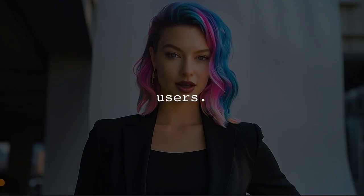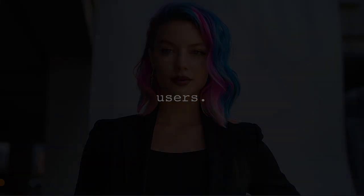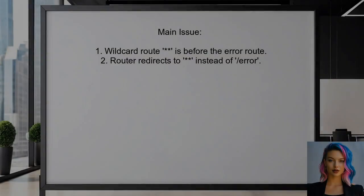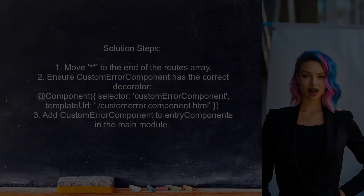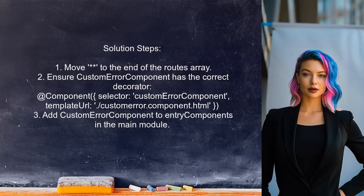Now let's look at the answers provided by other users. The main issue identified is the order of routes in the approuting.module.ts file. The wildcard route is placed before the error route, causing the router to always redirect to the wildcard instead of the custom error page. To fix this, move the wildcard route to the end of the routes array — this allows the error route to be reachable.